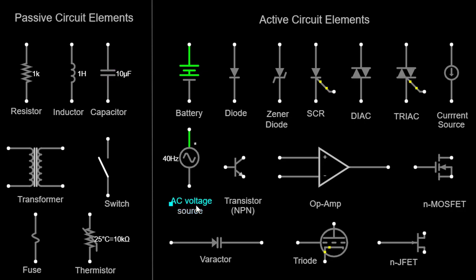AC voltage source. An AC voltage source is a device that generates an alternating current AC signal with a specific voltage and frequency. It is represented by a sine wave or a circle with a squiggly line inside, indicating an AC signal.